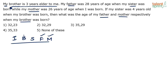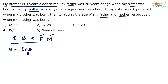My brother is three years elder to me. So I can write: b = i + 3. Brother is three years older than me — his age is three years more than my age.